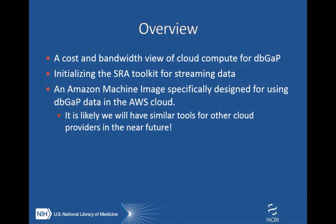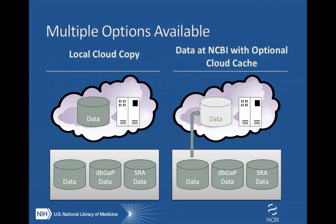It's very likely we'll have similar tools for other cloud providers in the near future. So one possible option is that you could make a specific private cloud for your datasets that are also in dbGaP. However, another option is to essentially use dbGaP itself as a storage cloud and use a compute cloud such as Amazon Web Services to process the data without storing there. An optimal way to do this may be to stream the data.